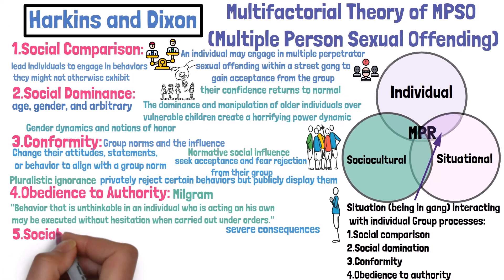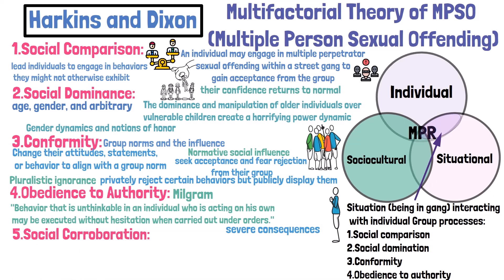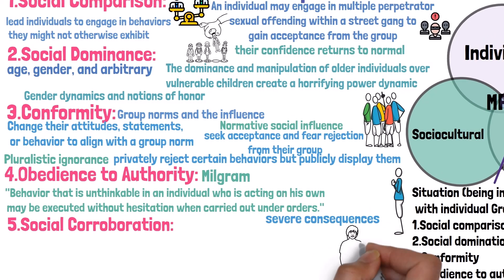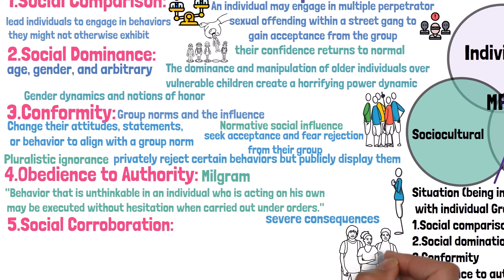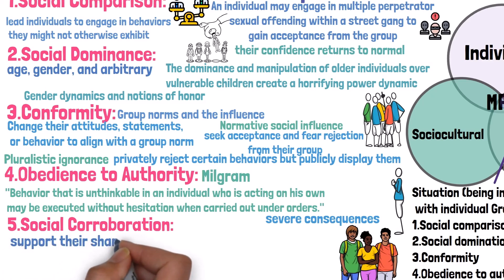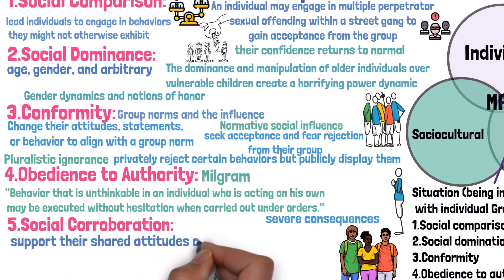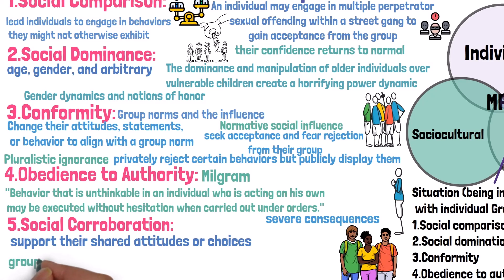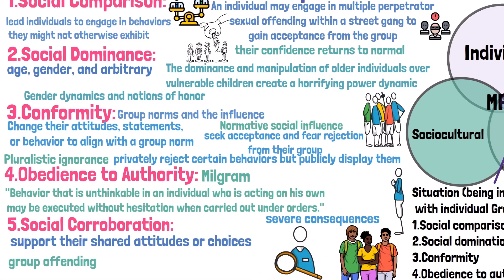In terms of social corroboration, seeking social corroboration occurs when individuals surround themselves with others who support their shared attitudes or choices. This behavior can be observed in group offending, as individuals look for like-minded individuals who reinforce and validate their distorted beliefs.